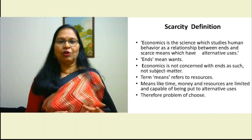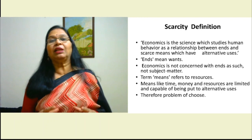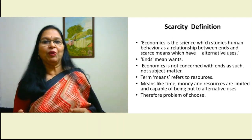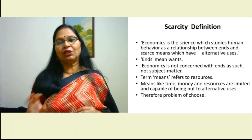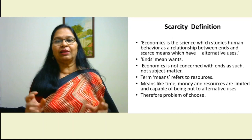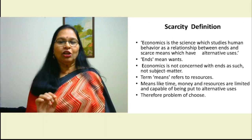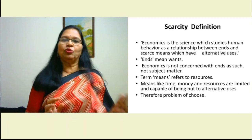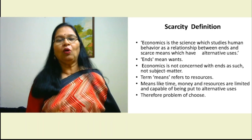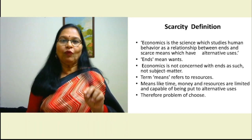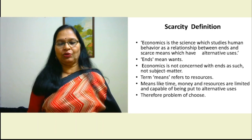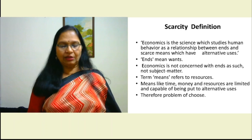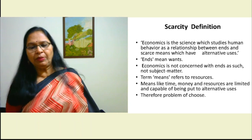Robbins was very clear that economics is not interested in the nature, quality, or quantity of ends — that incidentally became the subject of marketing. In economics, we want to know how to use limited resources to meet unlimited ends, given that all resources have alternative uses. Therefore we have to make a choice in the use of resources. Money, time, and energy are all considered resources, and they are all limited as well.